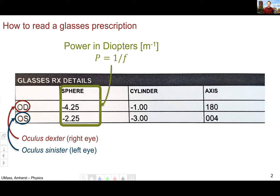The key number for our lab is the sphere number. This is the power in diopters of the lens where power is one over the focal length and diopters is one over meters. So if your focal length is in meters, the power will be in diopters.